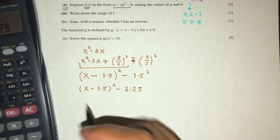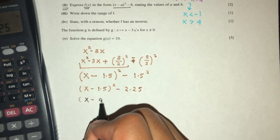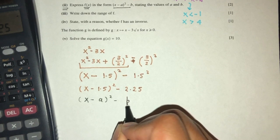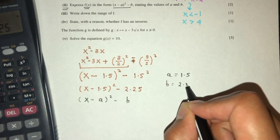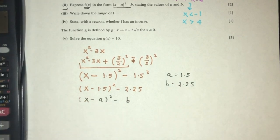So now by comparison, x minus a square minus b. So from this you can see a have to be 1.5, and b have to be 2.25. That is part two of the question.